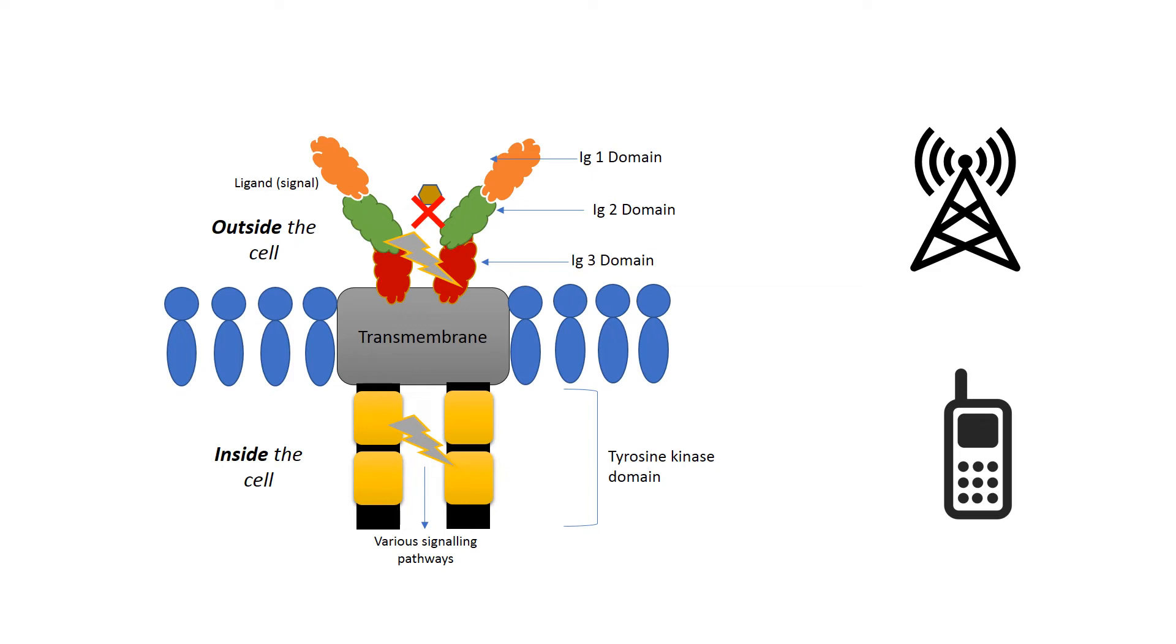Going back to the analogy, the signal that is transmitted from the cell tower reaches the antennae of the cell phone, but cannot enter because the antennae is broken. Now, without a correct signal giving certain instructions, the phone has a mind of its own, independent of the signal, and is essentially continually activated.